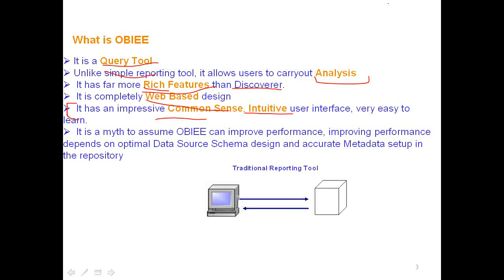OBI has mobile computing as well, so you can receive information on your mobile. For people who travel a lot, we design the solution for business users to be common sense and intuitive. Another option is pull — people go to the reporting desktop or website and fetch the information.